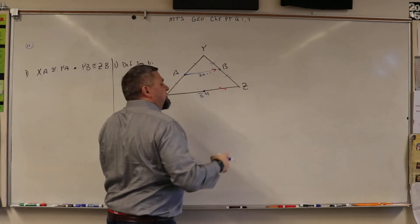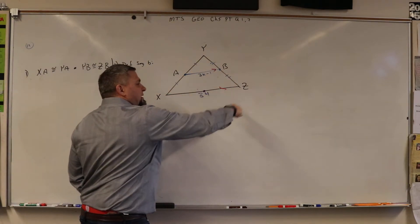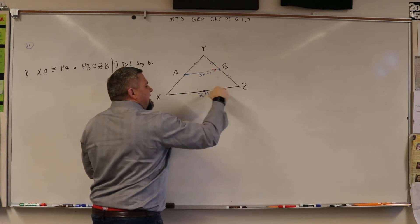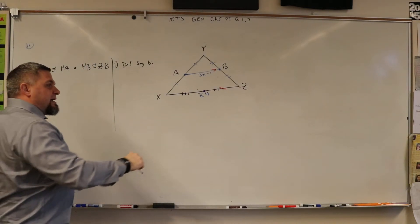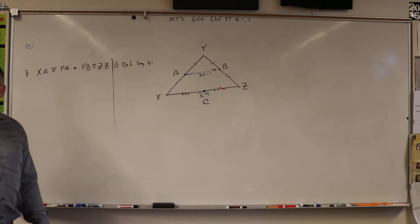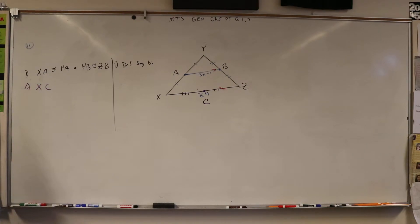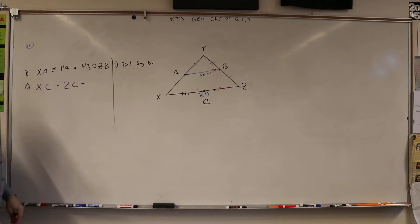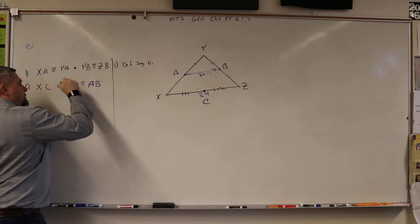We care that the other part to the segment bisector theorem. There's two parts to the segment bisector theorem. One part is that these two lines are parallel. The other part is that this bisector, this segment bisector right here, we're going to put a letter there, so how about we put C. What we're going to say is XC is equal to ZC, and it's also equal to AB. So these are all congruent.